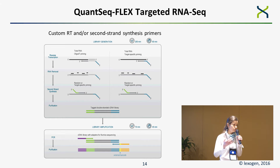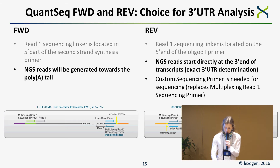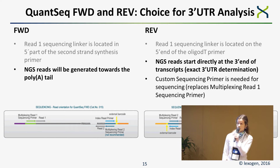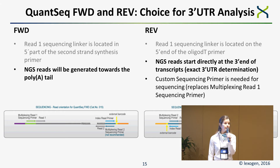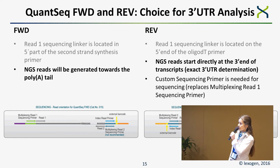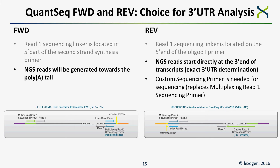In the end you have four versions for generating your fragment. When it comes to sequencing, QUANseq has two choices: a forward version and a reverse version. With the forward version, NGS reads are generated towards the poly-A tail and reflect the mRNA sequence. With the reverse version, NGS reads start directly at the 3' end of the transcript, so the first called base is the first base of the 3' UTR.